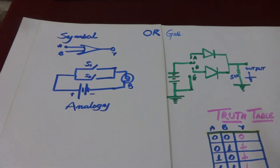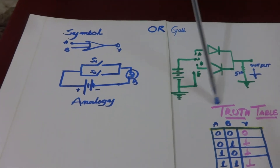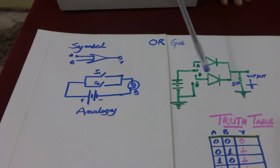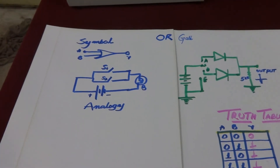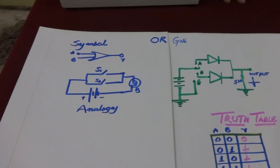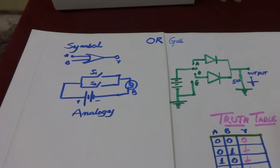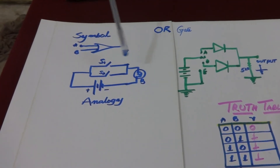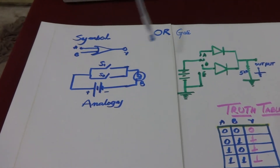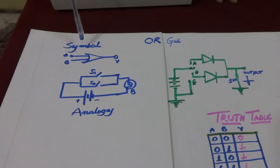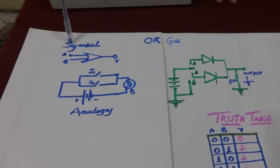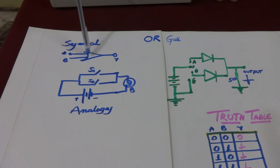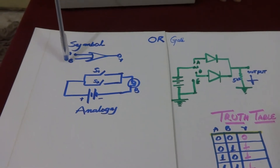Now let us verify the truth table of the OR gate. Before verifying the truth table, let me briefly explain what the OR gate is, what its symbol is, the analogy for it, and how we realize it. This is the OR gate symbol, and every OR gate has two inputs.